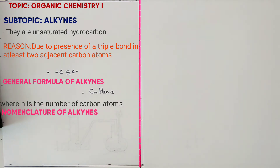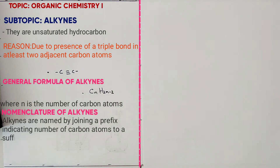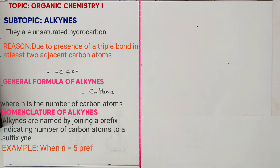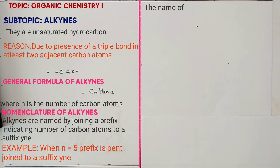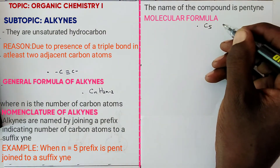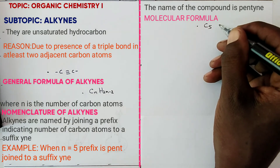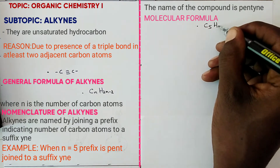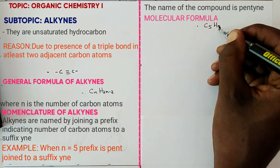Next we look at nomenclature. Alkynes are named by joining a prefix indicating the number of carbon atoms to the suffix '-yne'. For example, when n equals 5, the prefix is 'pent-'. You join it to the suffix '-yne' to get pentyne. The molecular formula is C5H8, because 2 times 5 minus 2 gives 8.